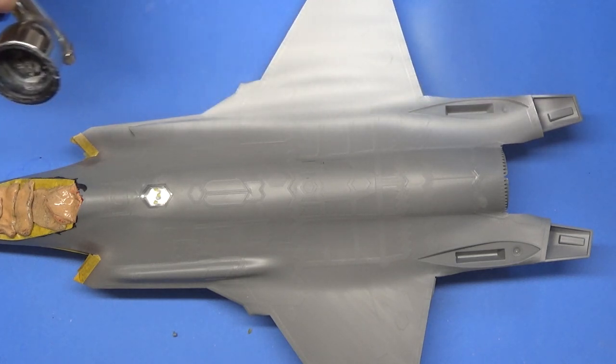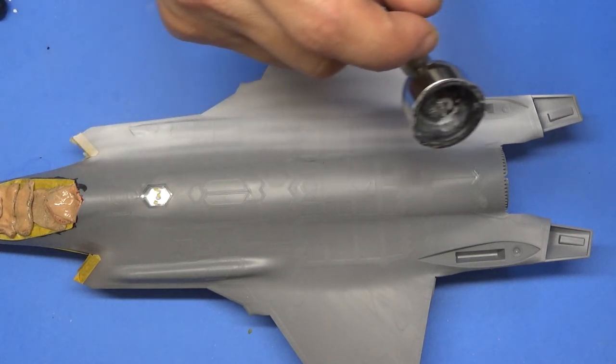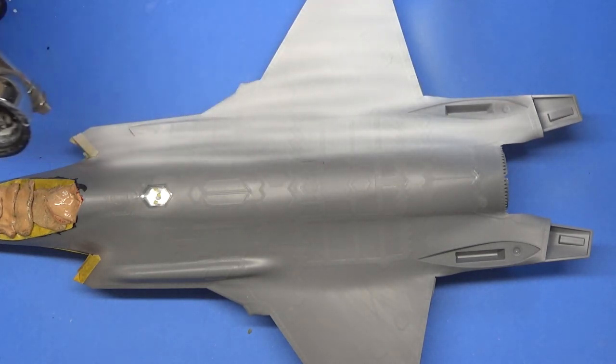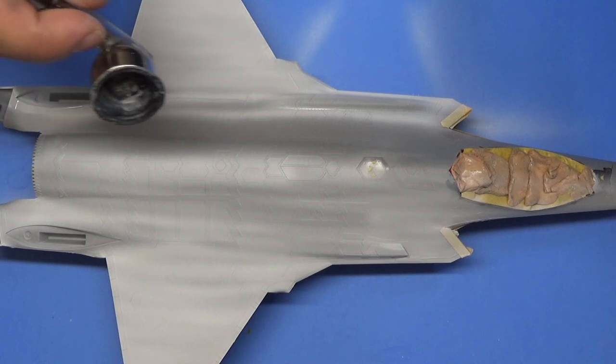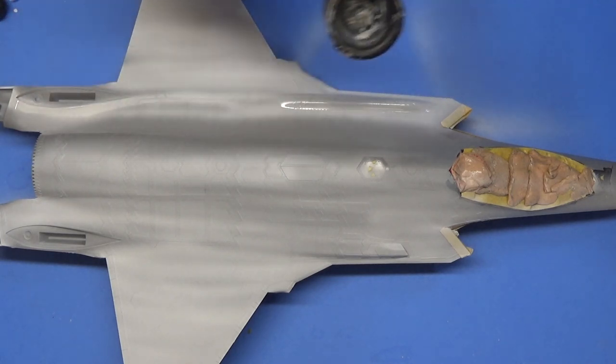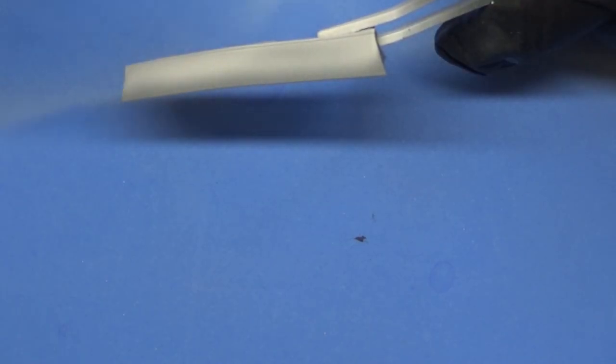This is the main body of the fuselage. Notice I don't have the wings on, not the wings, but the tail fins or any of that stuff on there yet. I did that for a reason to make masking easier. Yes, sometimes you do a little less because less can be more. And this is one of those instances.